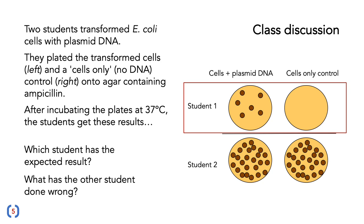The student with the correct result is student one. You've got some colonies on the cells-plus-plasmid-DNA plate, but no colonies on the cells-only control, because that has ampicillin in it and will kill off all the cells. For student two, there could be a number of things wrong: the student may have forgotten to put ampicillin in the agar, put too little ampicillin, or plated cells with plasmid DNA on both plates. This illustrates the importance of including controls to get an indication of what may have gone wrong.